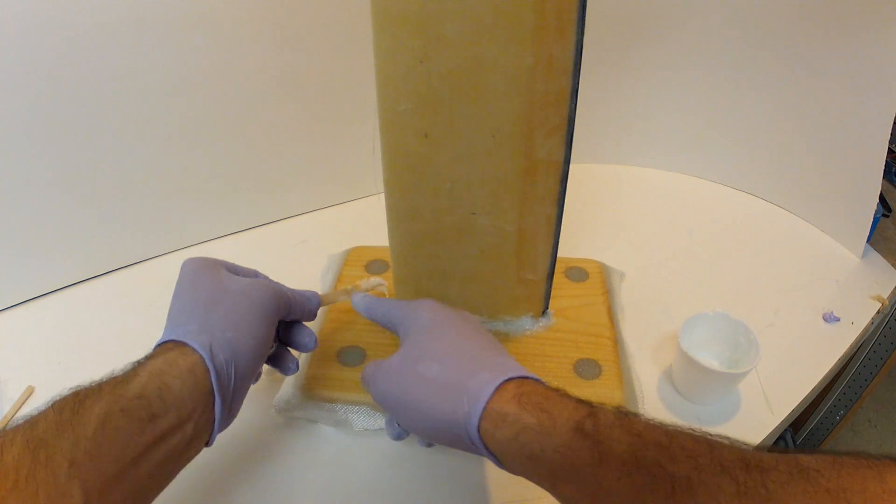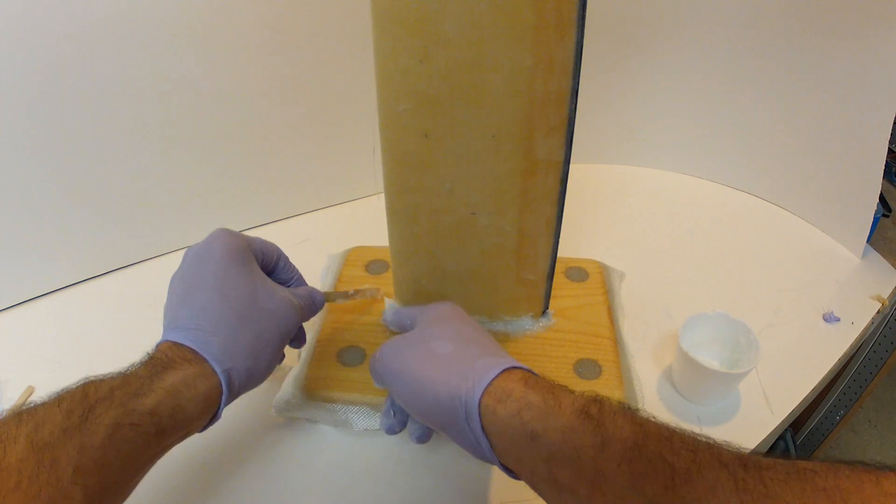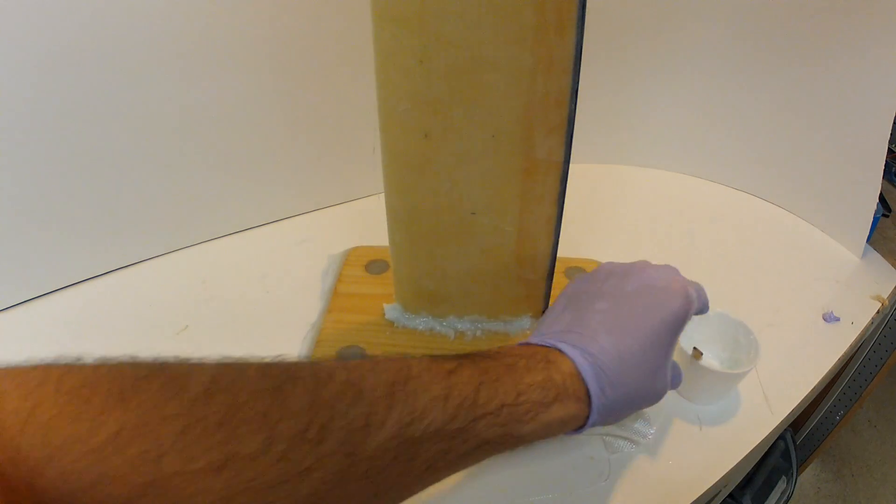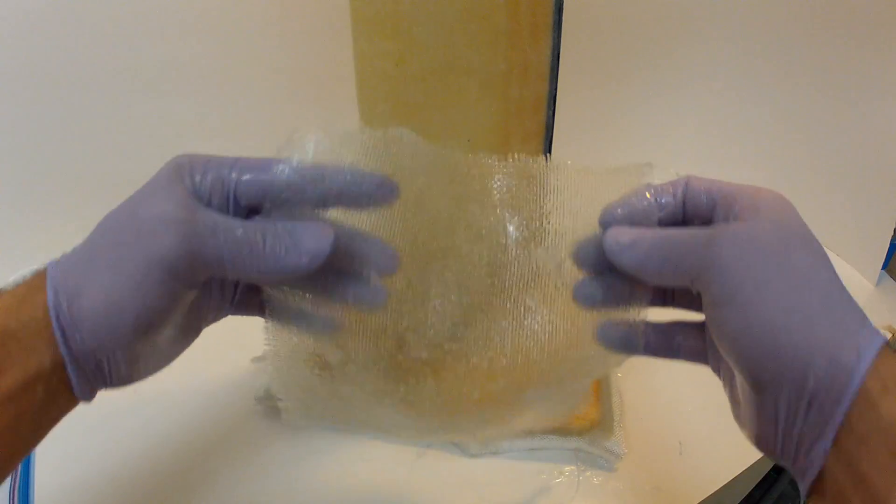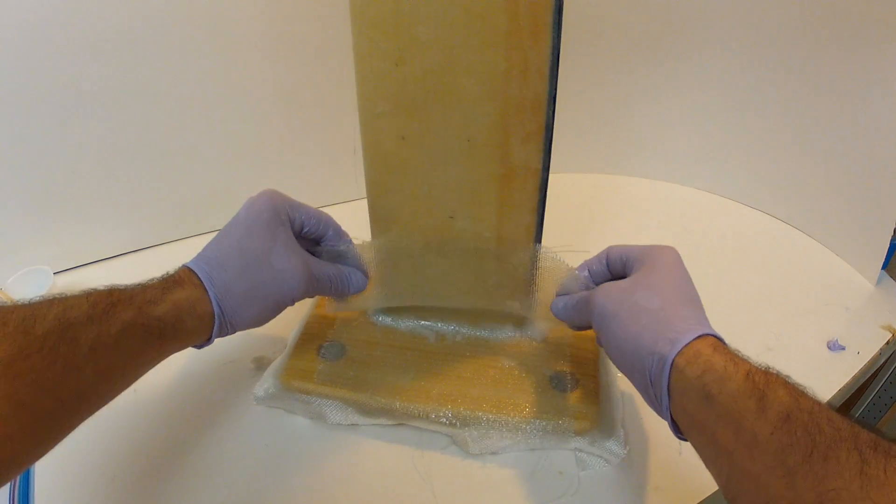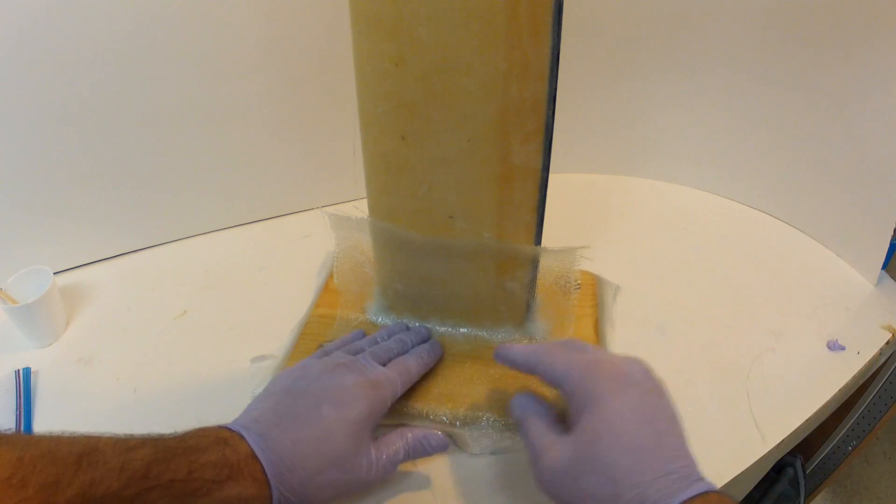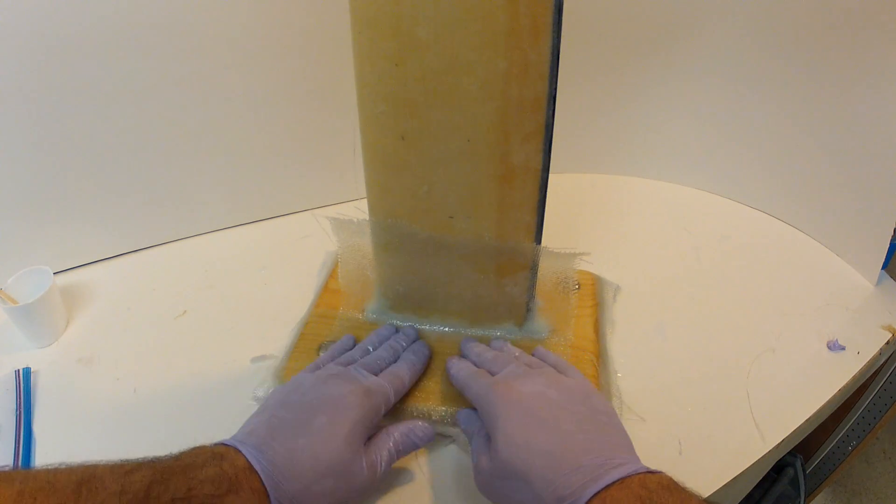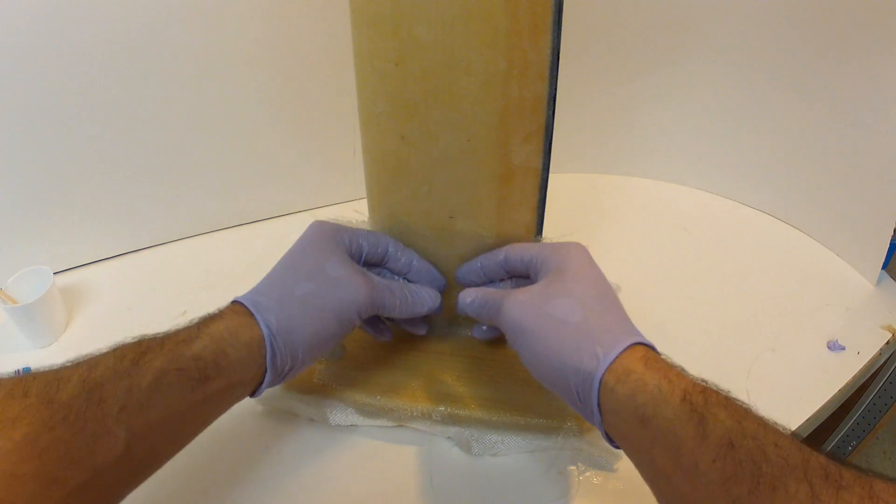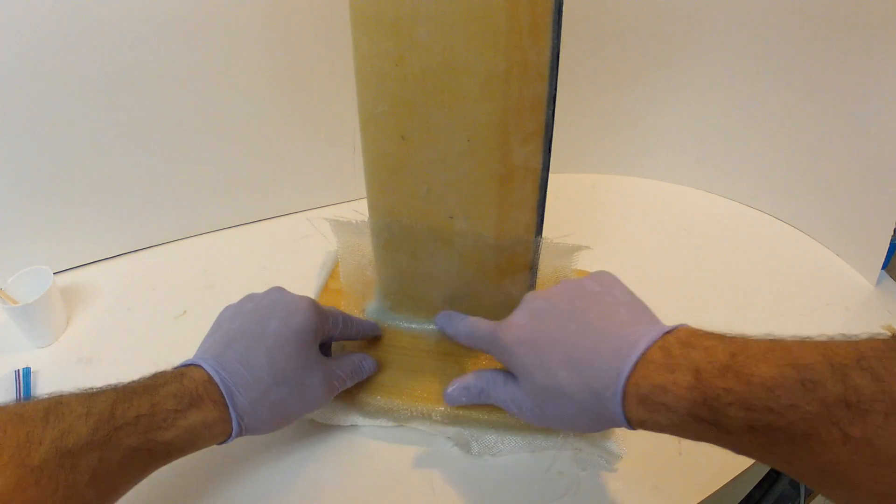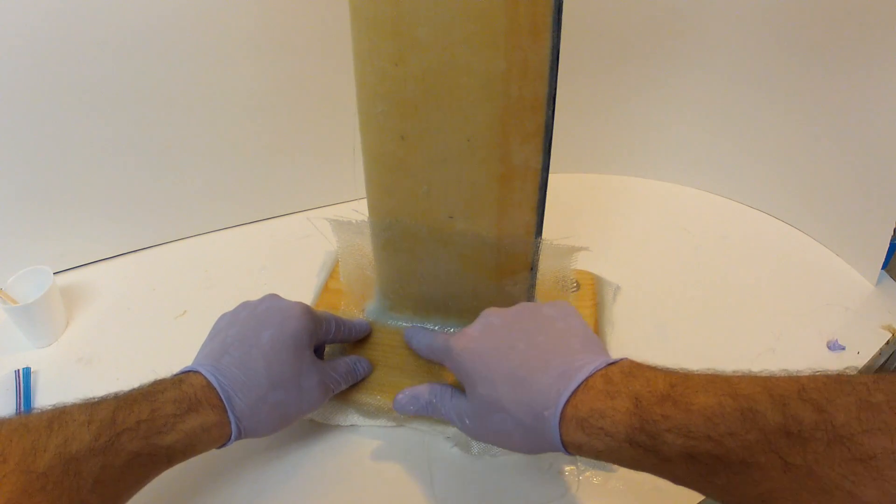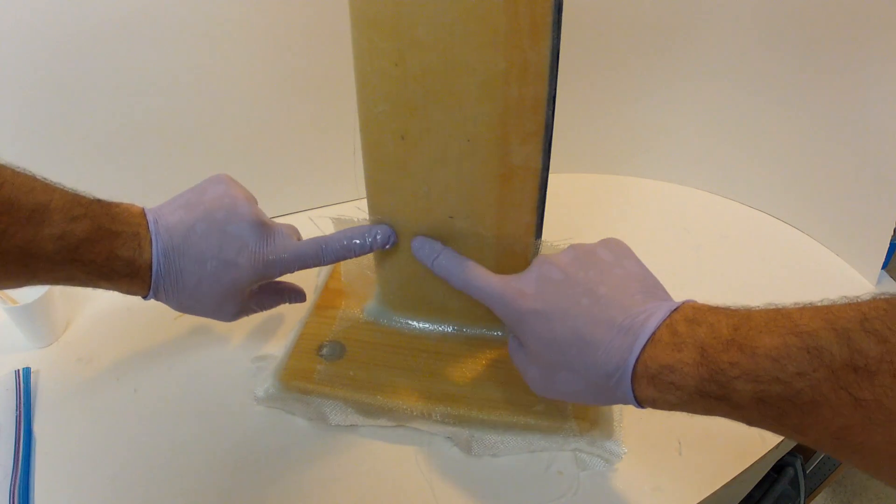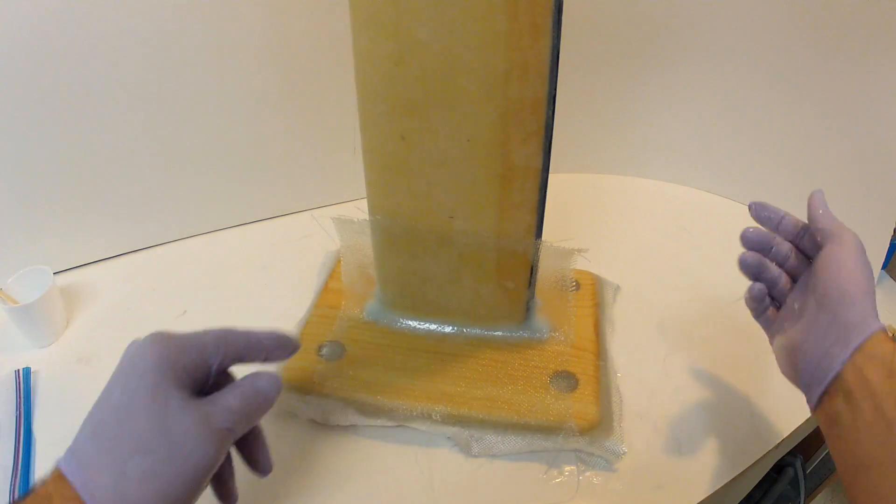And so when we lay up this peanut butter epoxy, it's just the same as before. A glob at both ends and just a little bit going down the sides. Okay, so just as before I got my glass that's already pre-wet, I'm just going to lay it up. This is the exact same as the other joint. Get rid of any air bubbles, smooth that part out, and then do the same on the other side.